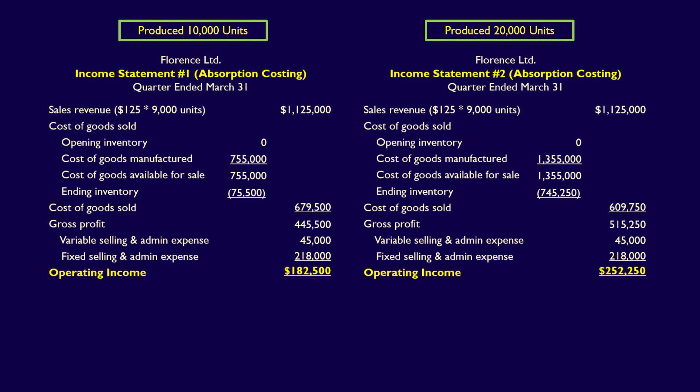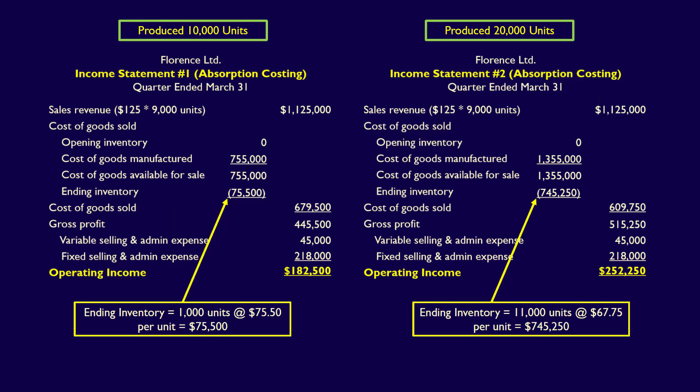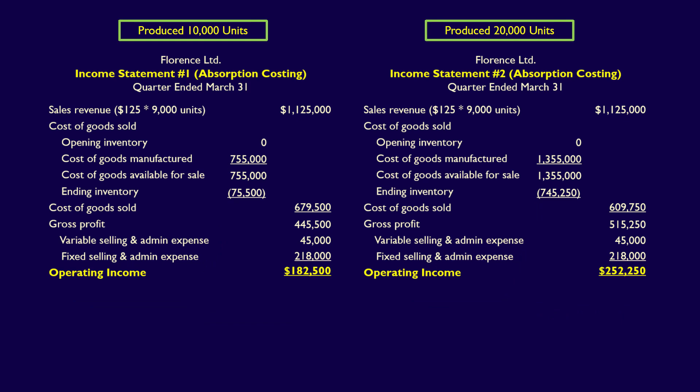What does this mean to management? It means that management can manipulate operating income by producing more units, because the cost of goods sold is changed by changing production. Is this a good thing? Absolutely not. Higher production may increase operating income by lowering cost of goods sold, but it means the company is holding finished goods it can't sell — clearly shown by the increase in ending inventory units and value. Holding excess inventory is expensive because you need space and personnel to manage it, and inventory assets not generating revenue provide no benefit. This is clearly a problem with absorption costing — there has been no change in units sold, so there should be no difference in operating income.